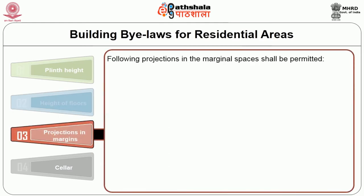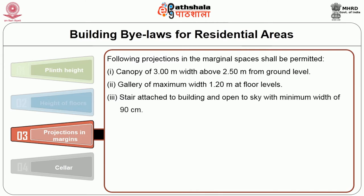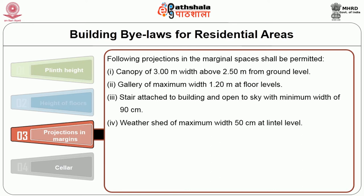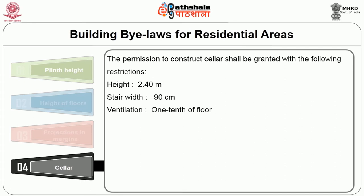Projections in margins: the following projections in marginal space shall be permitted — canopy of 3 m with clearance above 2.5 m from ground level; gallery of maximum width 1.2 m at floor levels; stairs attached to building and open to sky with minimum width of 90 cm; weather shed of maximum width 50 cm at lintel level. For cellar, permission shall be granted with the following restrictions: height 2.4 m, stair width 90 cm, and ventilation one-tenth of the floor area.